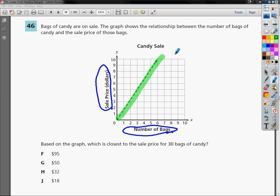So you can go, for each number bag of candy you go over, you have to go the same amount up. So it's the same each time. So it's easy to use that information to figure out exactly how much one bag of candy costs.